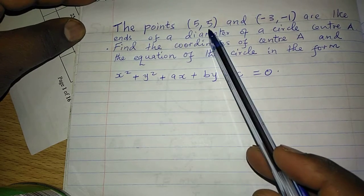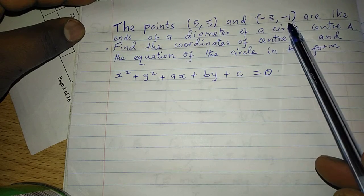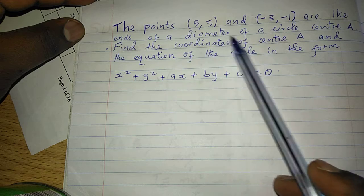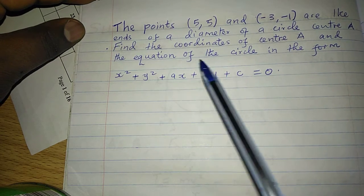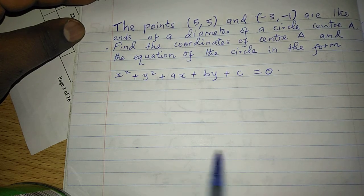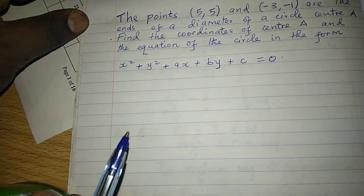We are told that the points (5, 5) and (-3, -1) are the ends of a diameter of a circle, center A. Find the coordinates of center A and the equation of the circle in the form given.